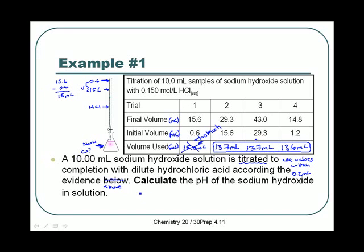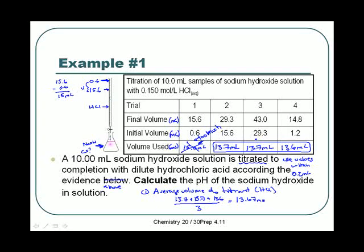Those are the three valid volumes. Step one is always to find the average volume of titrant. In this case our titrant is HCl, so the average is (13.7 + 13.7 + 13.6) ÷ 3, giving 13.67 milliliters. I always use an extra sig dig here so we can be as accurate as possible — our final answer will still have three sig digs. Now that we have the average volume, we need a chemical reaction to figure out what happened.